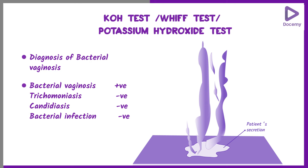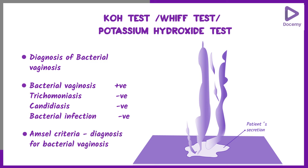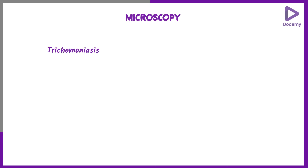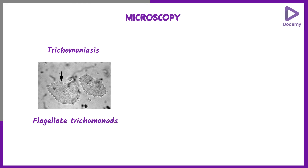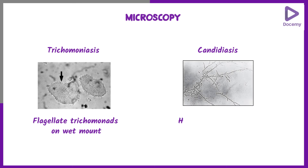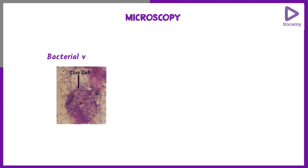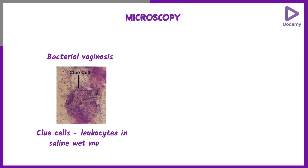Bacterial Vaginosis also has something called the Amsel criteria, which we use for its diagnosis. Upon microscopy in a patient with Trichomoniasis, you will see the presence of flagellate Trichomonas on the wet mount. In Candidiasis, you will see presence of hyphae and buds; prepare the mount in 10% potassium hydroxide solution to show hyphae and buds. In Bacterial Vaginosis, you will see presence of clue cells — leukocytes — on a saline wet mount.